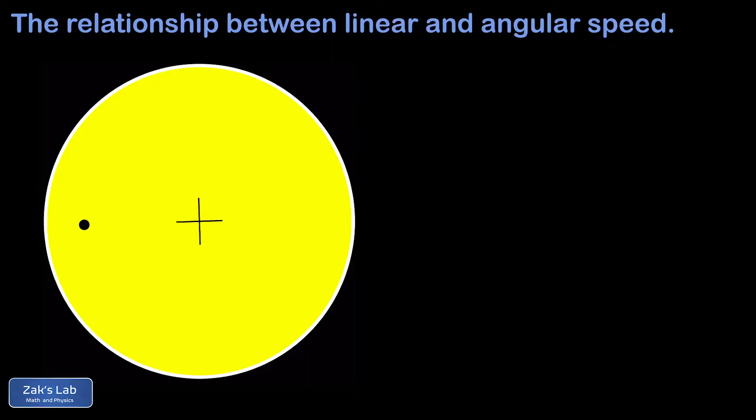This video is the second in a three-part series on uniform circular motion kinematics, and in this video we're deriving the relationship between linear and angular speed for an object in uniform circular motion. So our object is just this little black spot painted on a rotating disk.